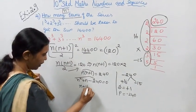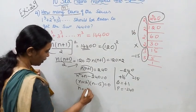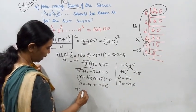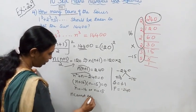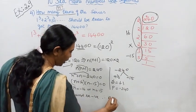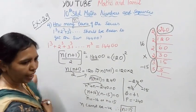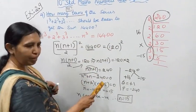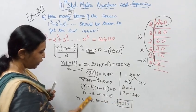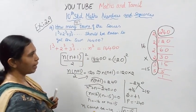So (n + 16)(n - 15) = 0, giving n = -16 or n = 15. But n cannot be negative, therefore n = 15. How many terms? The answer is 15.